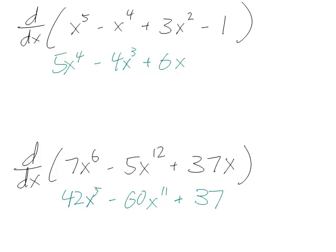Or you can just remember that for a linear term, for a linear function, the coefficient or the slope of the linear function is the derivative. So you can just write down 37 and ignore the x.